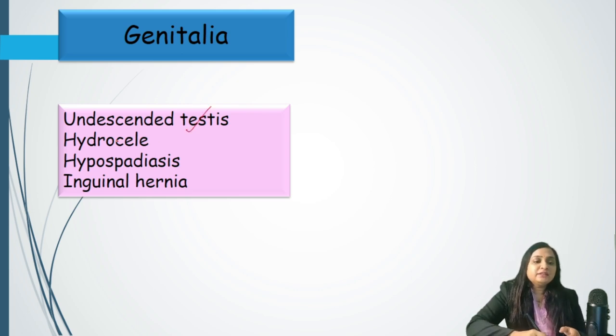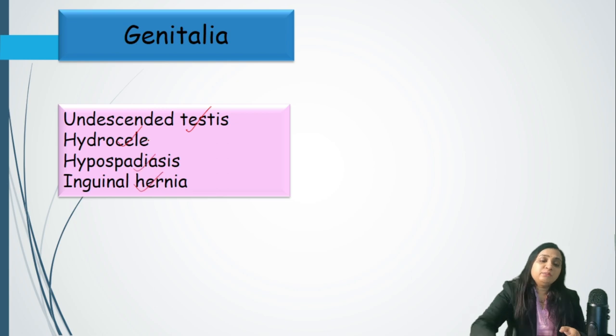Last but not least are the genitals and anal opening. In the genitals, we look for undescended testes, hydrocele, inguinal hernia, and hypospadias. That's all about newborn head to toe examination. Your suggestions are welcome for improvement — let me know what else you would like to learn. Till then, take care of yourself, study hard, and study smart.